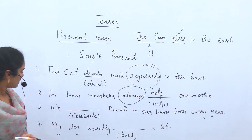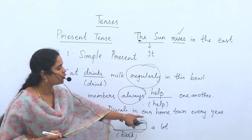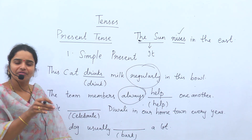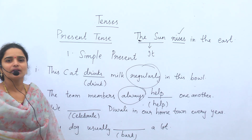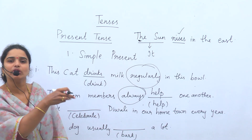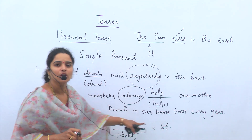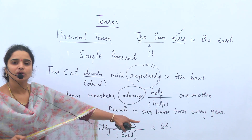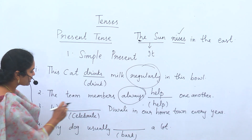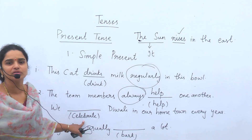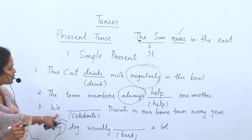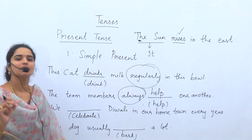Next sentence: 'We ___ Diwali in our hometown every year.' Many people from villages migrate to cities for job purposes, but for celebrations they go back to their hometown. The clue word is 'every year' — every year is used, so this is simple present tense. Subject is 'we', so the verb is 'celebrate' — not 'celebrates'. The answer is: 'We celebrate Diwali in our hometown every year.'